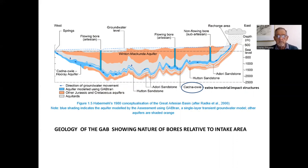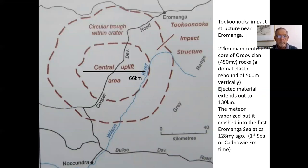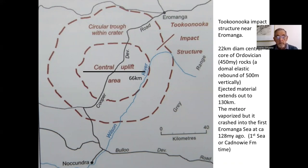While shallow seas existed in the Surat Basin, extraterrestrial impact structures — very large fragments of meteorite from an extraterrestrial source — ploughed into the shallow seas and left huge craters at the level of the lower Cadnawi Formation. One of them is the Tookoonooka structure, which is 50 to 60 kilometres across in the central uplift area and goes out as a circular trough or crater of the order of 100 kilometres. This central uplift brings Ordovician rocks to the surface, much like when you drop a pebble into mud and material bloops up from deeper down. This occurs only about 70 or 80 kilometres southwest of Eromanga in Queensland.